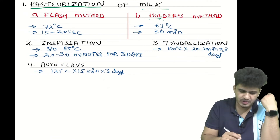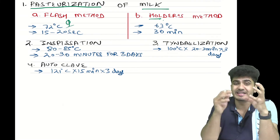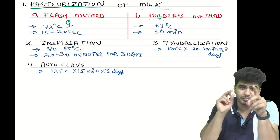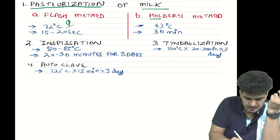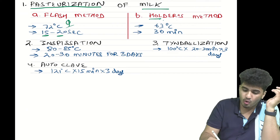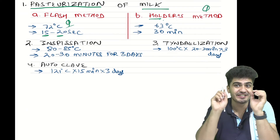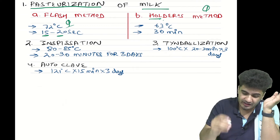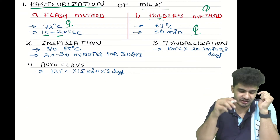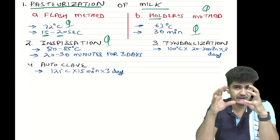In the flash method, the temperature is 72 degrees Celsius and the timing is very short — 15 to 20 seconds. Remember, it is measured in seconds. Then comes the holder's method: you hold at 63 degrees Celsius for 30 minutes.